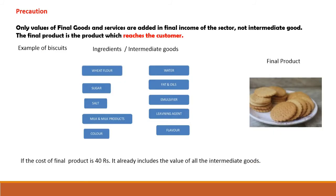While doing this, one very important thing to keep in mind is that only the value of final goods and services are added in the final income of the sector — not intermediate goods. The final product is the product which reaches the customer. For example, to make a biscuit we need wheat flour, sugar, salt, milk, milk products, color, water, fat, and oil — all these are intermediate goods used to make the final good.